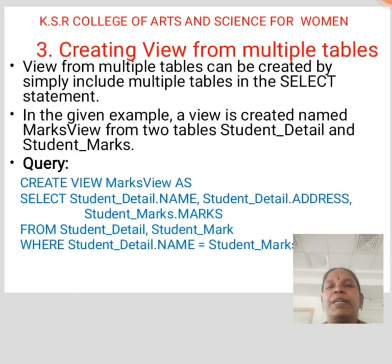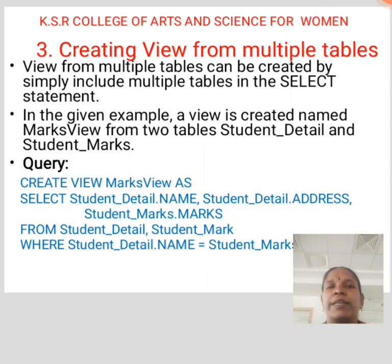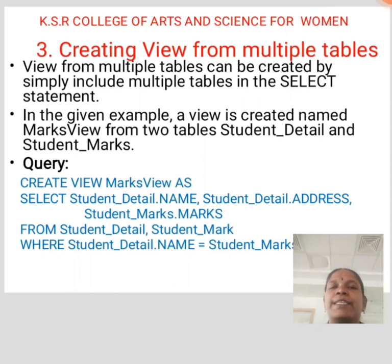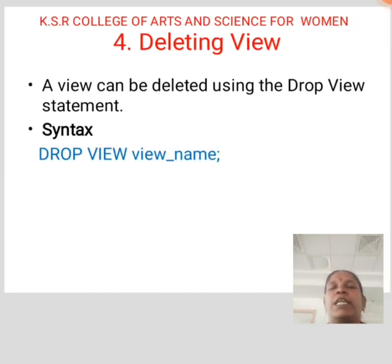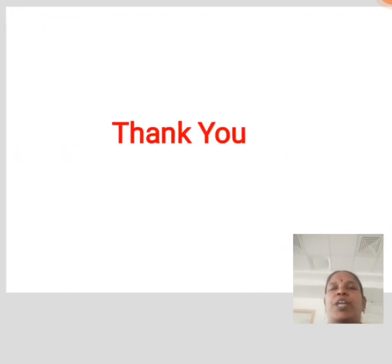Creating a View from Multiple Tables: A view from multiple tables can be created by simply including multiple tables in the SELECT statement. In this example, a view named 'marks_view' is created from the tables 'student_details' and 'student_marks': CREATE VIEW marks_view AS SELECT student_details.name, student_details.address, student_marks.marks FROM student_details, student_marks WHERE student_details.name = student_marks.name. Deleting a View: A view can be deleted using the DROP VIEW statement. Syntax: DROP VIEW view_name. Thank you.